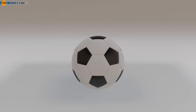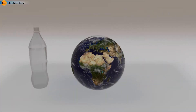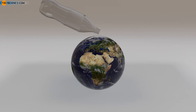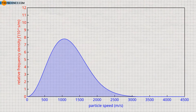To get an idea of the large number of molecules in an ideal gas, imagine a football filled with air. The number of gas molecules in such a football would correspond approximately to the number of 1-liter water bottles that would theoretically be necessary to completely fill the entire volume of the Earth with water. For such a large number of gas molecules, reliable statistical predictions can then be made about the speed distribution.